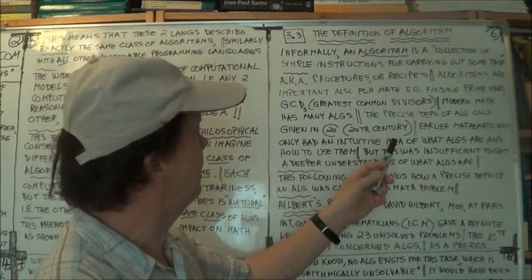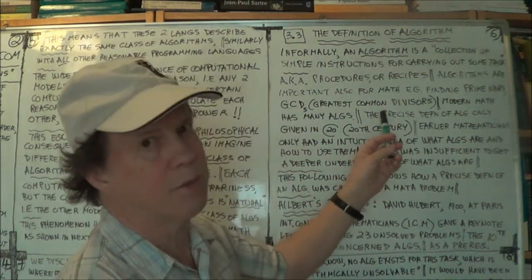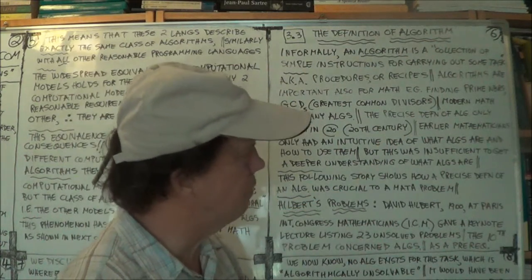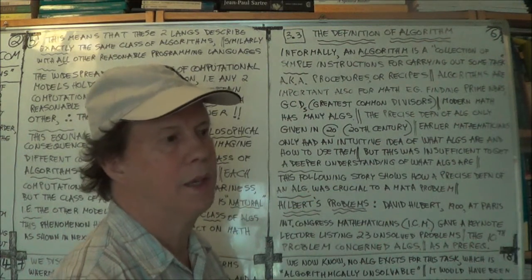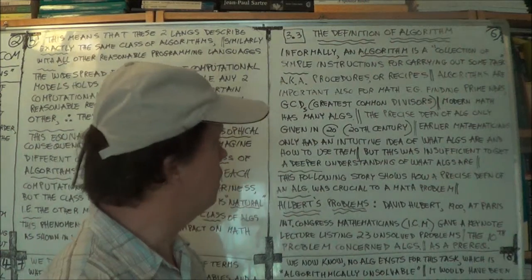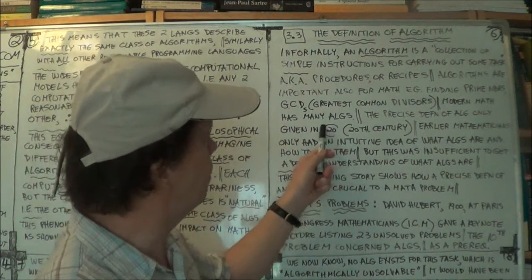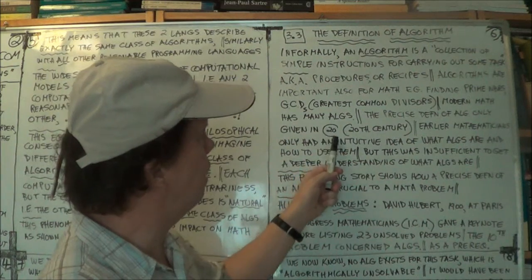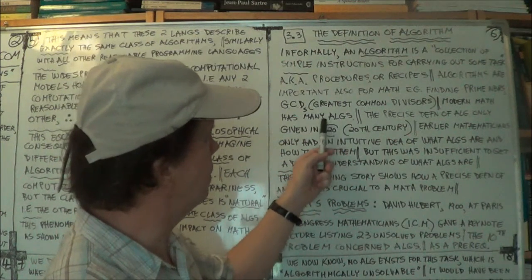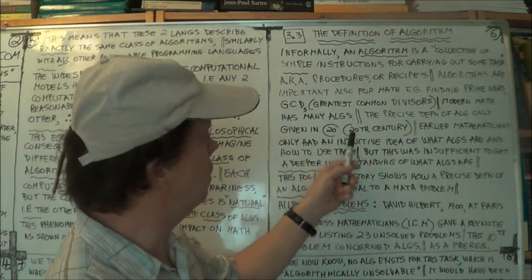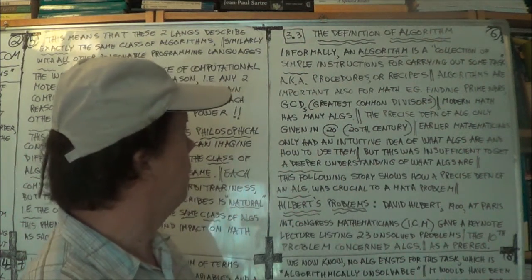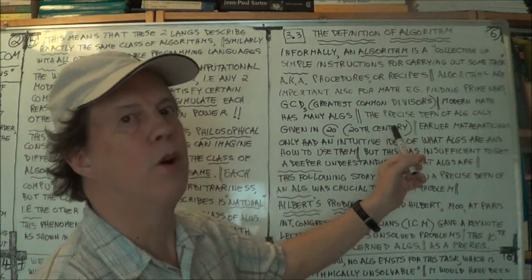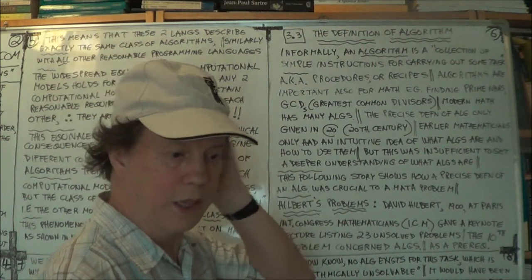All right. Now, but a precise definition, that's what I'm talking about here. But a precise definition of what an algorithm is, that only really got going in the 20th century. It's a pretty standard symbol for 20th century, you have the century number inside a big capital C. So it's just shorthand for 20th century.